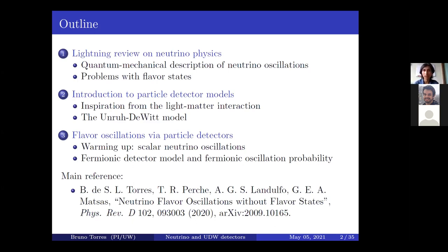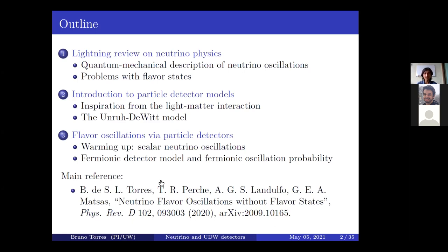For completeness, I'll briefly skim through particle detector models. Then we'll go to the main subject: the formulation of flavor oscillations with particle detector models, first with a toy model using neutrinos as scalar fields, and then with a more refined version coupling to neutrinos as fully fermionic spin-half particles. Here's the reference in case anybody's curious — you can check both the PRD, which is open access, and the arXiv numbers.